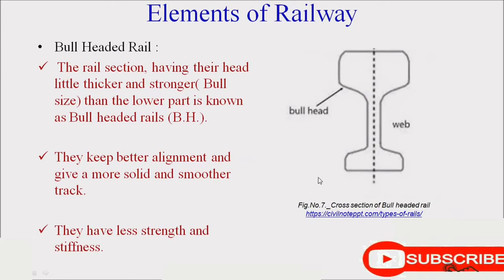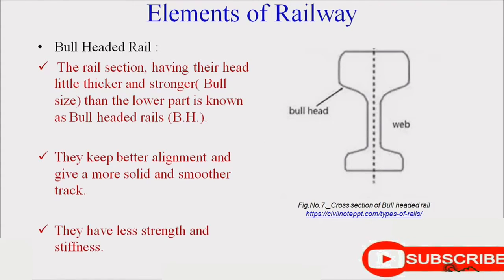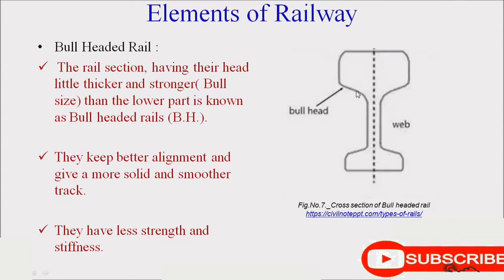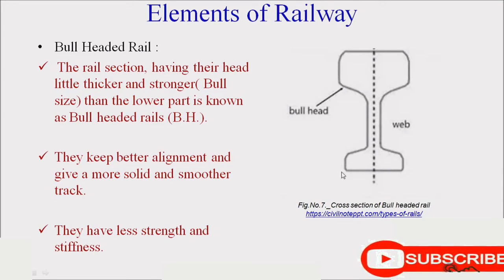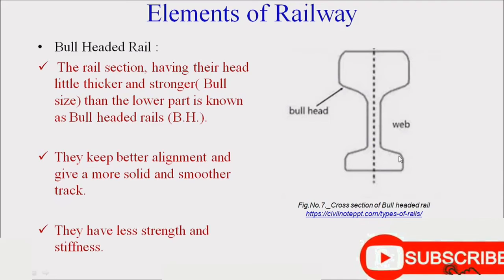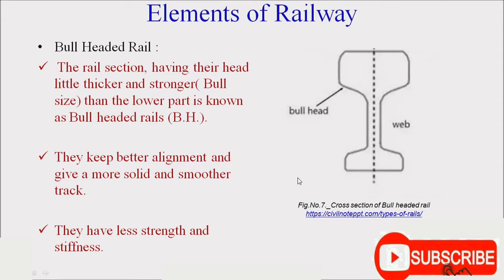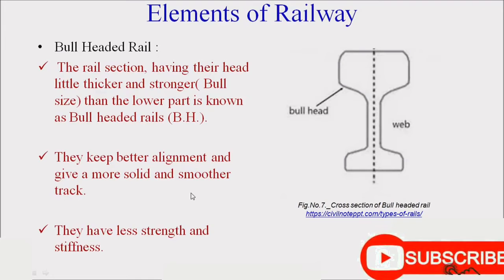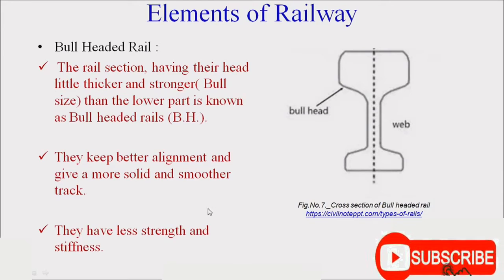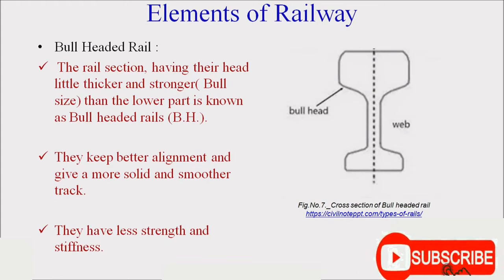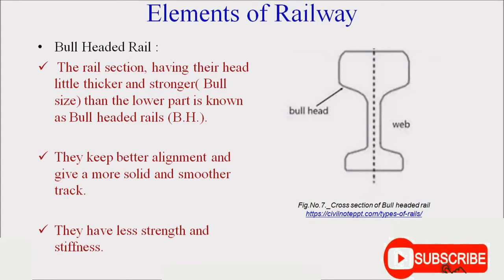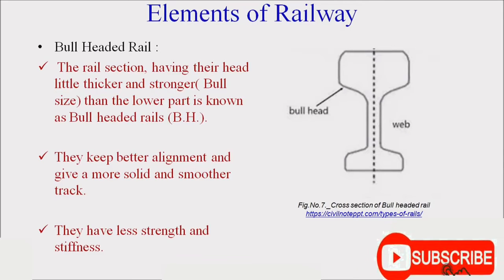Bull-headed rails have a head that is slightly thicker and stronger than the lowermost part. The top section has slightly more dimension compared to the lower cross-section. They keep better alignment and give a more solid and smoother track, but they have less strength and stiffness. Among the three types, flat-footed rails have the most strength and stiffness.